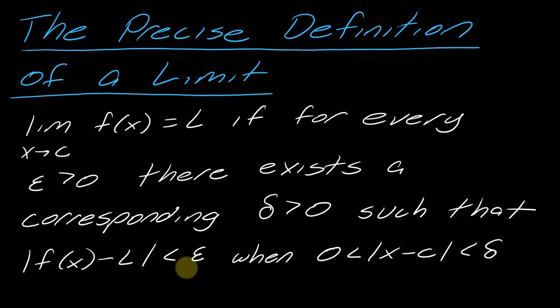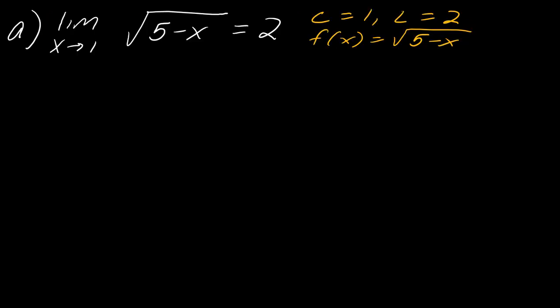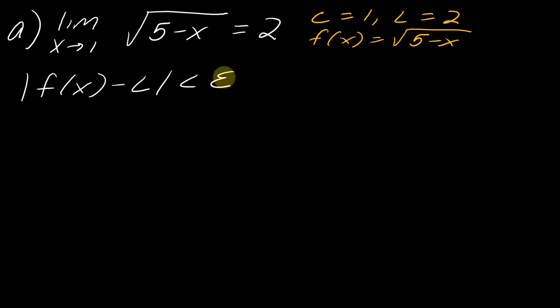If you remember the story from the precise definition of the limit explanation video, this was the last part where you try to find that general solution. That's what we're trying to do here, except these are going to be much more complicated examples. To start, I'm going to use this part of the definition of the limit. I can fill out the f of x and the L. We don't have a specific epsilon, so I'm going to set this up and solve for x, just like you would if you had a specific number for epsilon.